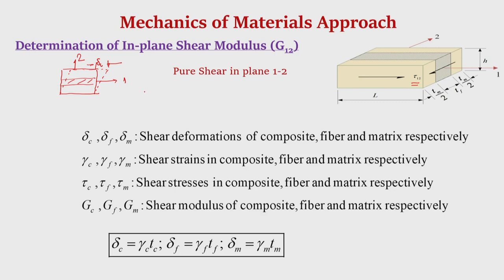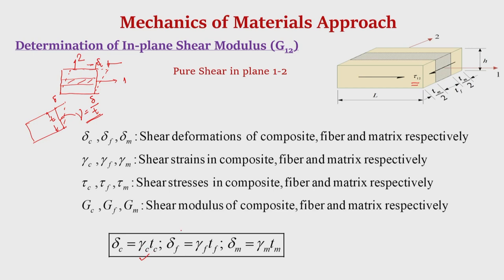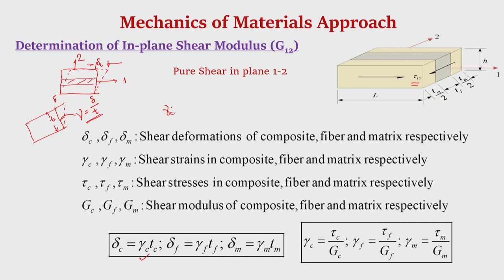Using the definition of shear strain: at a point with shear deformation delta and initial thickness T, the shear strain is the tangent of the angle, which equals delta/T for small angles. So the shear strain for the composite gamma_C = delta_C / T_C. Similarly, shear strain in the fiber gamma_F = delta_FT / initial thickness of fiber, and the matrix shear strain follows the same relation. We can write the shear deformation in terms of the corresponding shear strain and initial thickness.